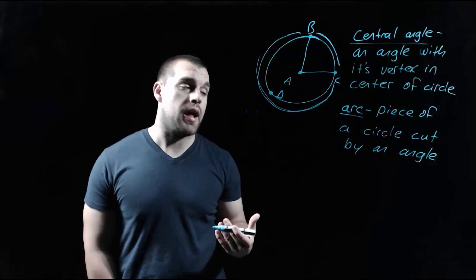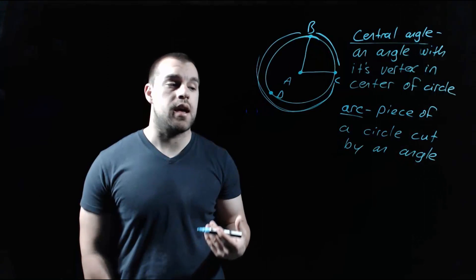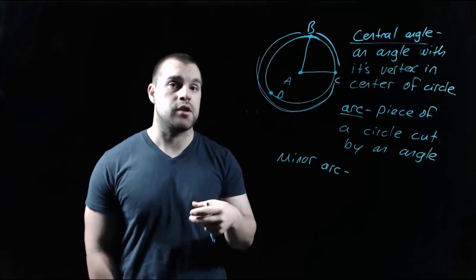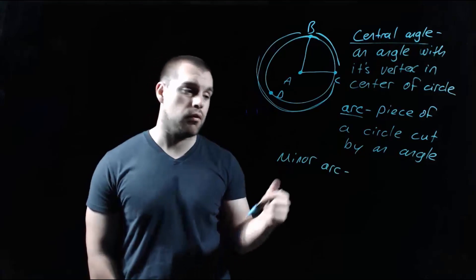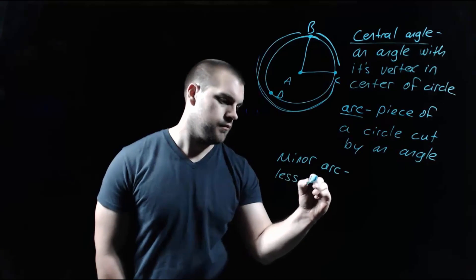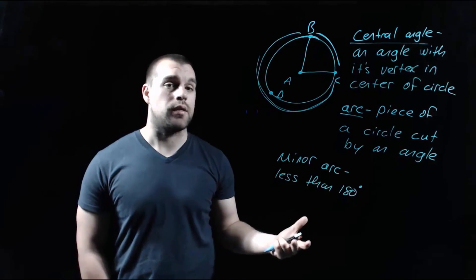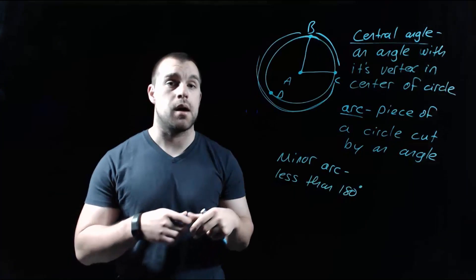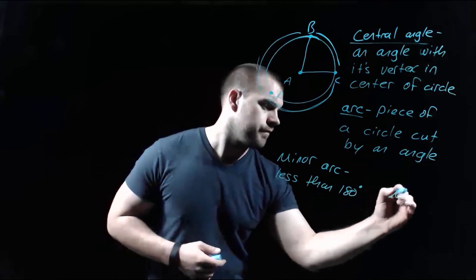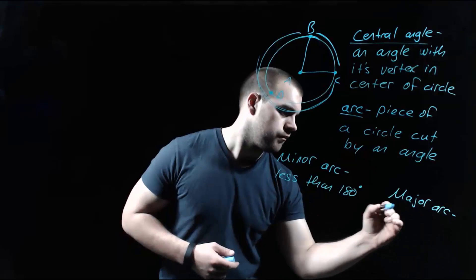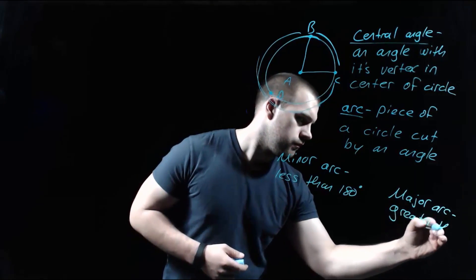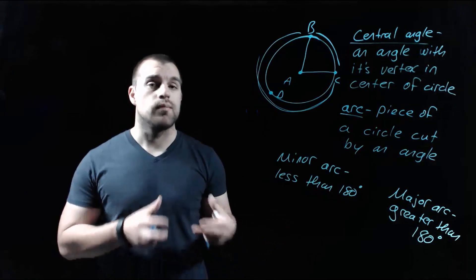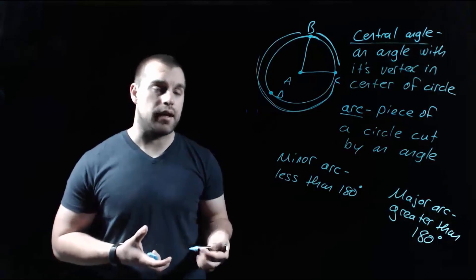There are three kinds of arcs that we could have. The first kind is a minor arc, and that's an arc with a measure that is less than 180 degrees. The second kind is a major arc, and that's an arc that has a measure greater than 180 degrees. And then our third kind of arc is a semicircle, and its measure is exactly 180 degrees.